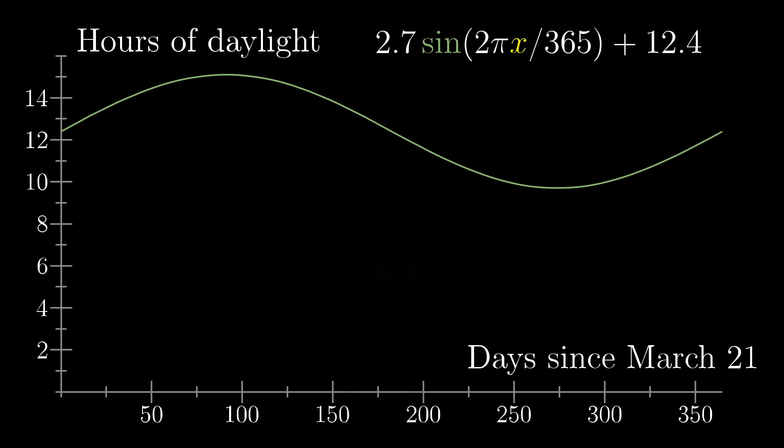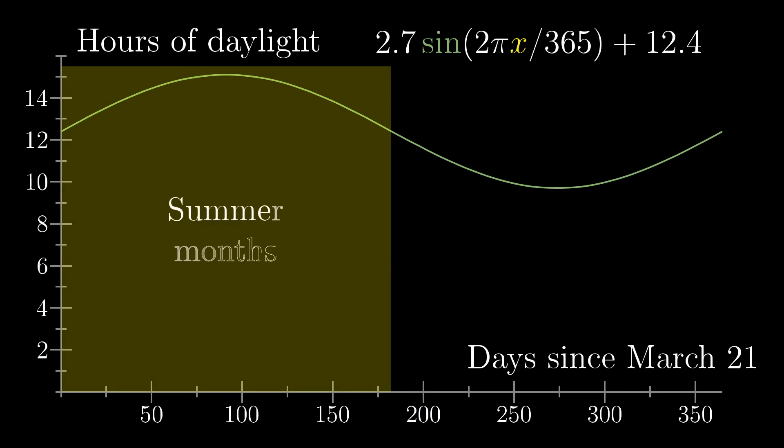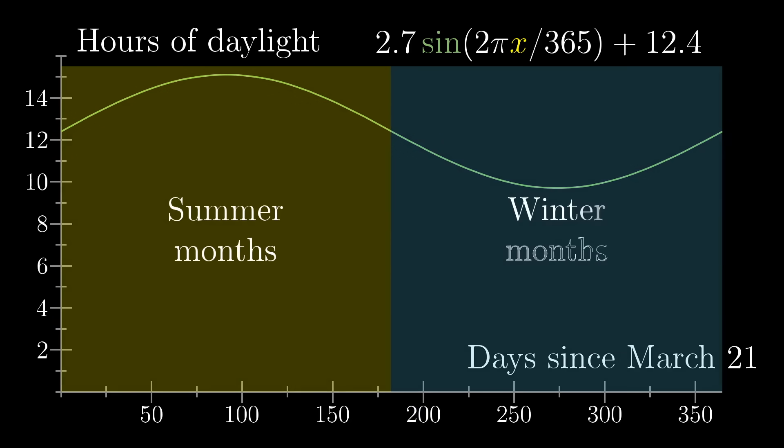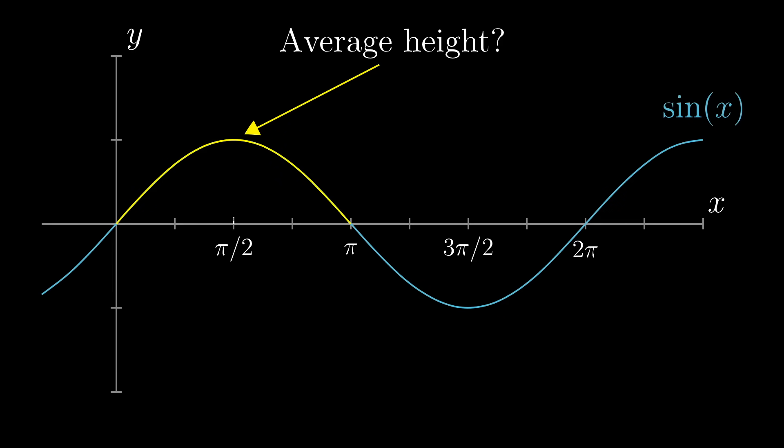So if you wanted to predict, say, the average effectiveness of solar panels in summer months versus winter months, you'd want to be able to answer a question like this: What is the average value of that sine function over half of its period? Whereas a case like this is going to have all sorts of constants mucking up the function, you and I are just going to focus on a pure, unencumbered sine function. But the substance of the approach would be totally the same in any other application.